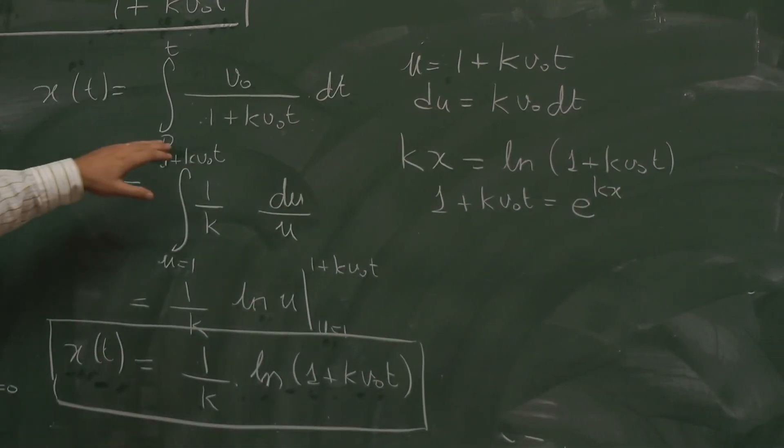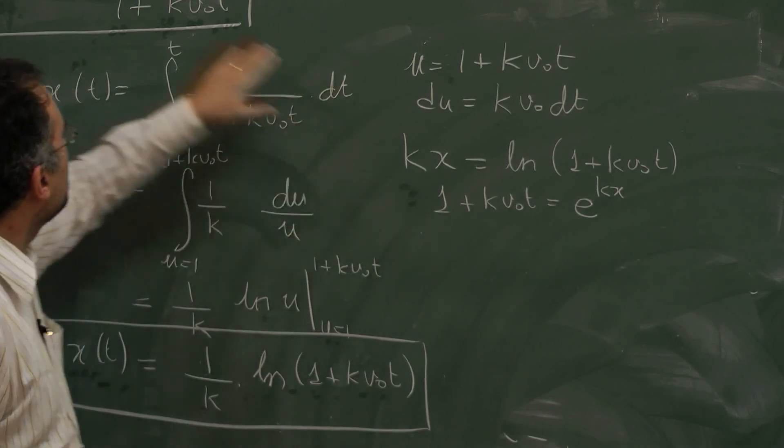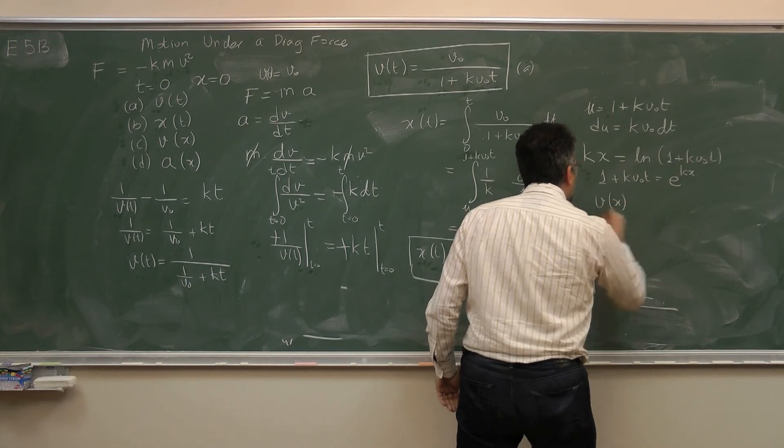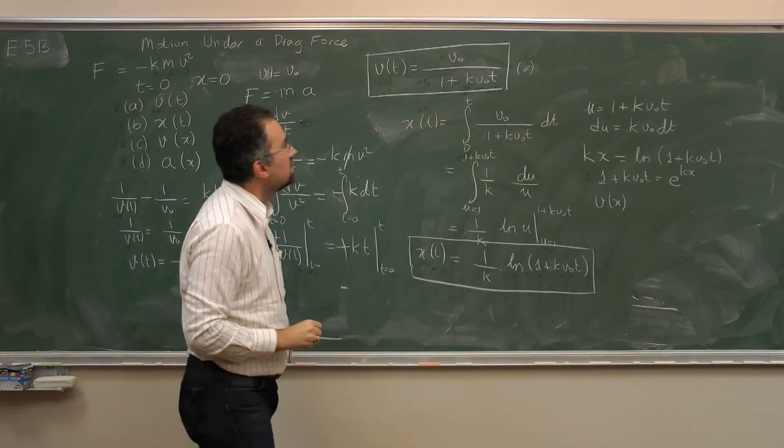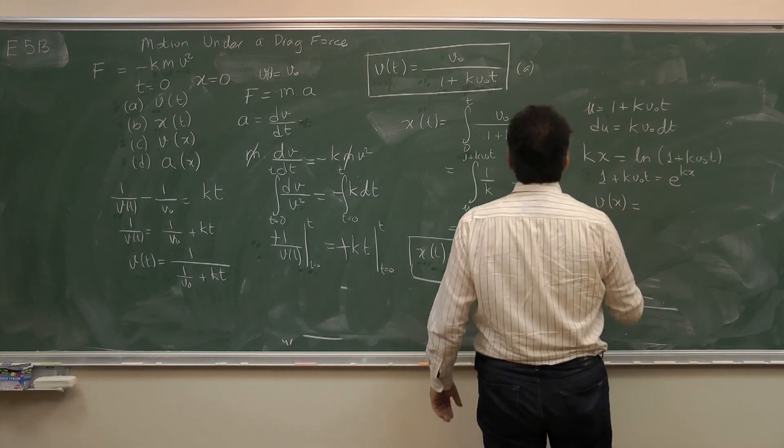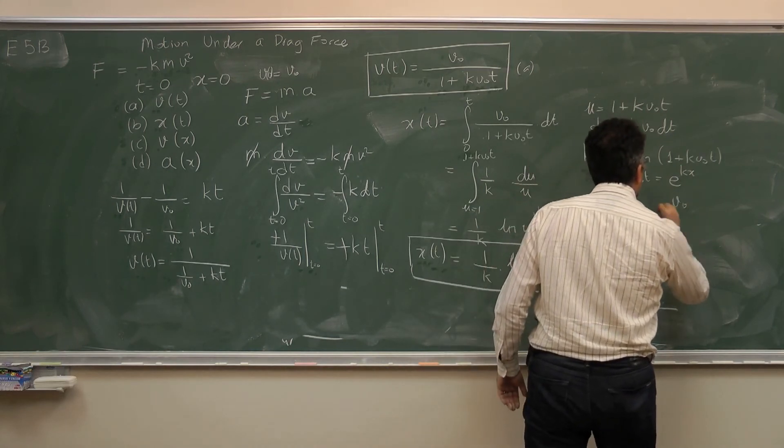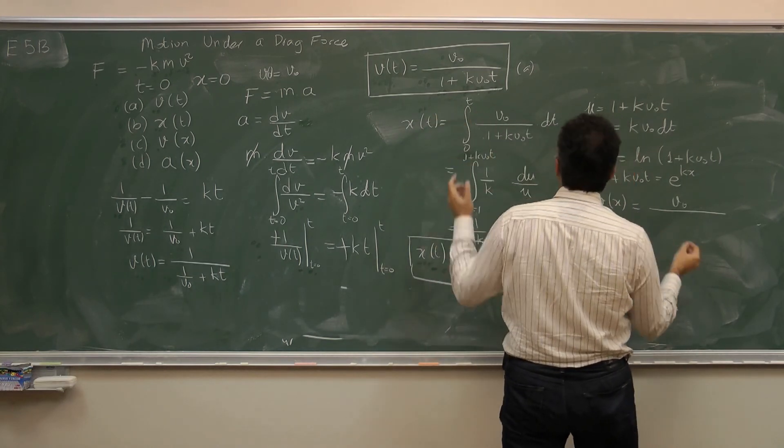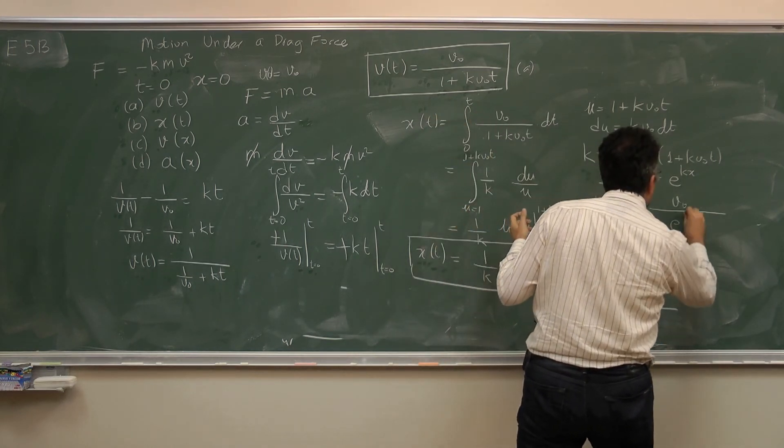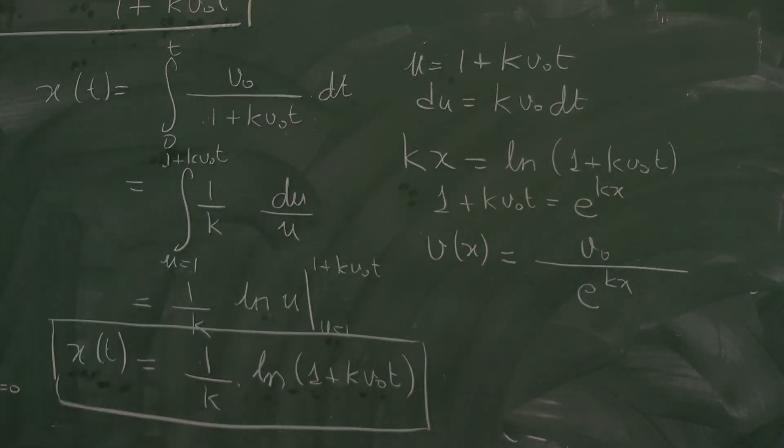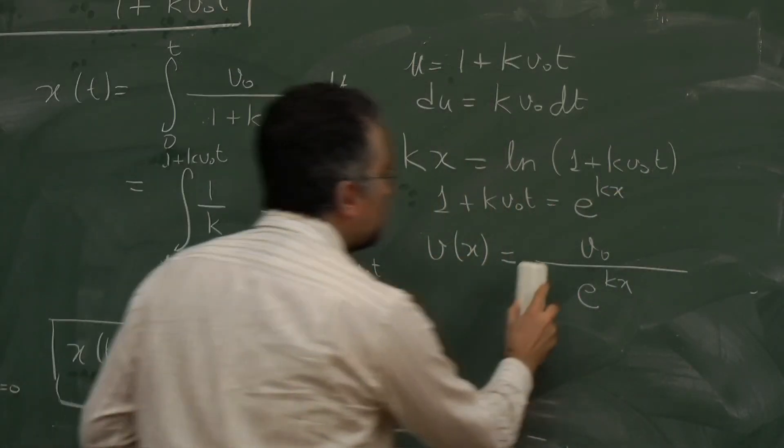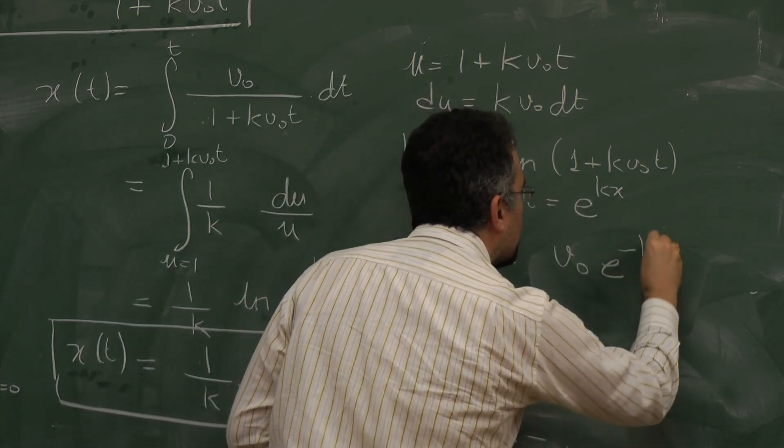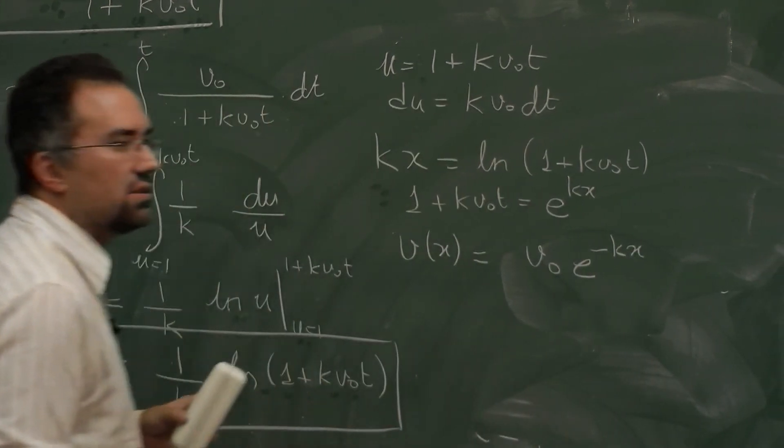By plugging it over here, I just find v now as a function of x, because I have eliminated time from the equation. Now I have v equals v0 over (1 plus k v0 t), which is just e to the power kx. Or I can write that without any fractions, v0 e to the power minus kx.